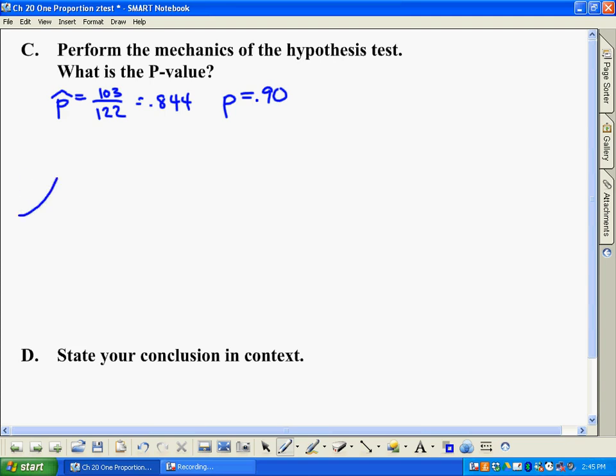So when we do our normal curve here, whatever p is, that's going to be our mean. So we're going to have a normal curve here with a mean of 0.90. I'm going to go ahead and write that in here: p equals 0.90. P-hat would be over here somewhere on the left. P-hat is 0.844. We're going to go ahead and shade that in.